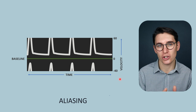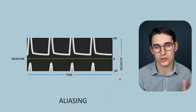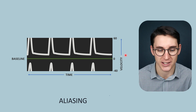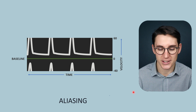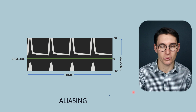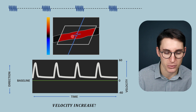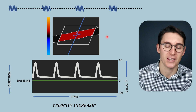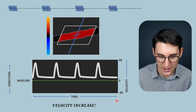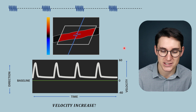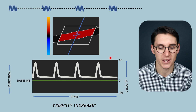Now I want to show you why aliasing occurs and how we can go about reducing aliasing within these spectral Doppler images. Let's start with two examples. First, we are measuring the velocity of blood flow within a vessel here, and we've got this velocity scale on the right-hand side on our y-axis of the spectral Doppler.